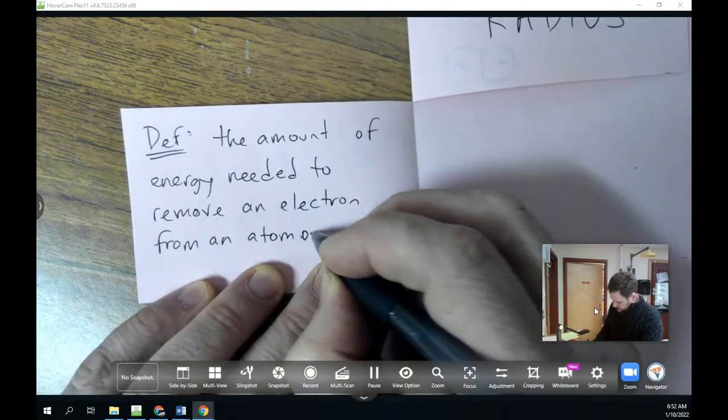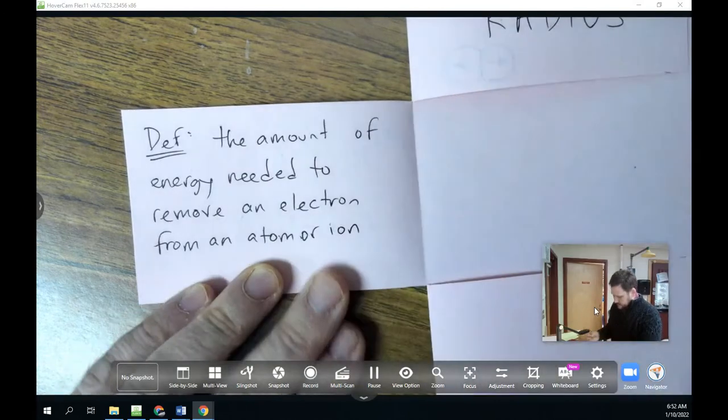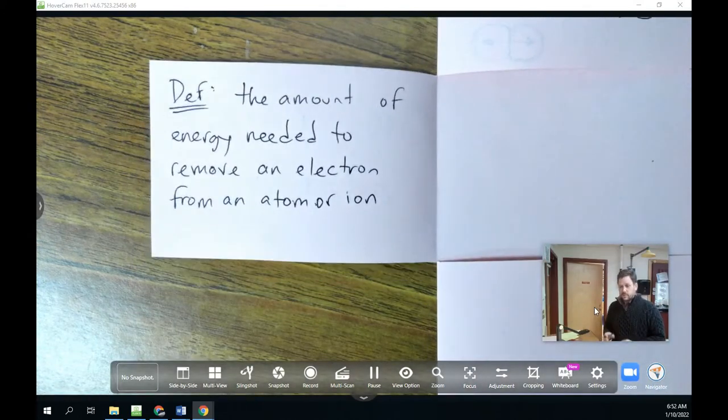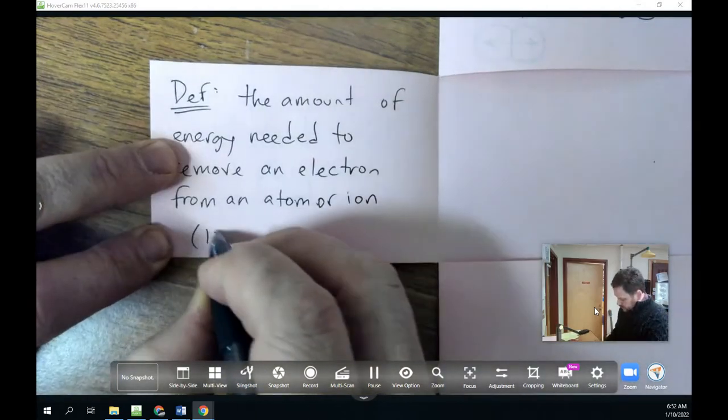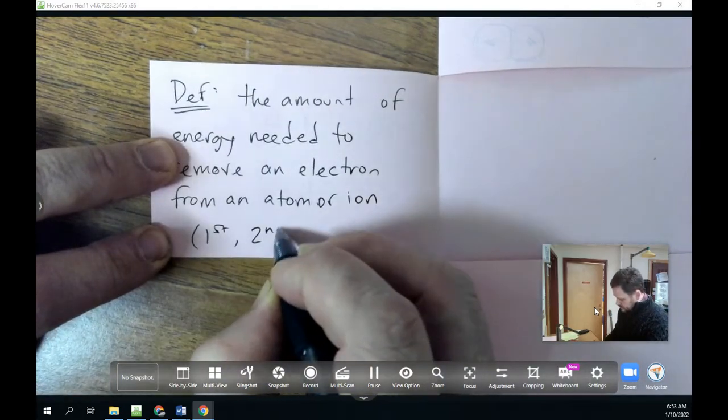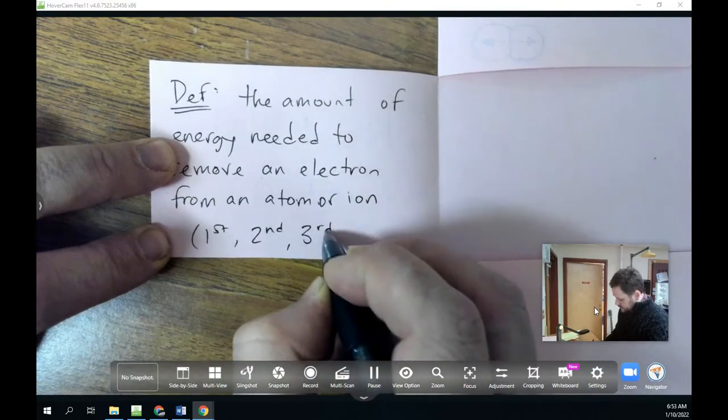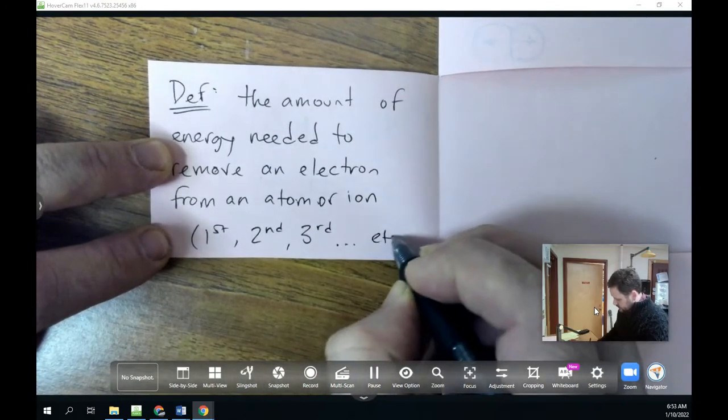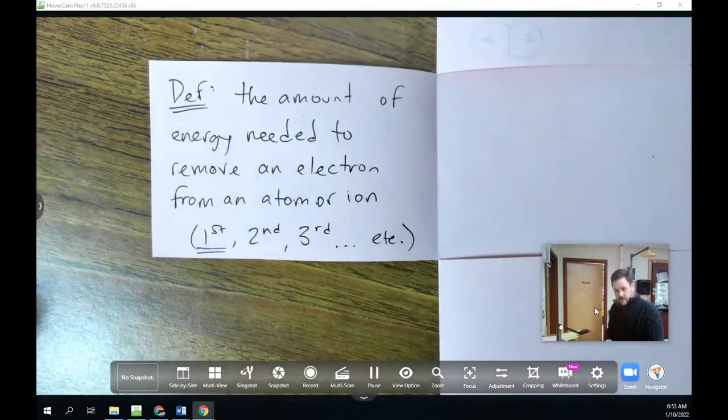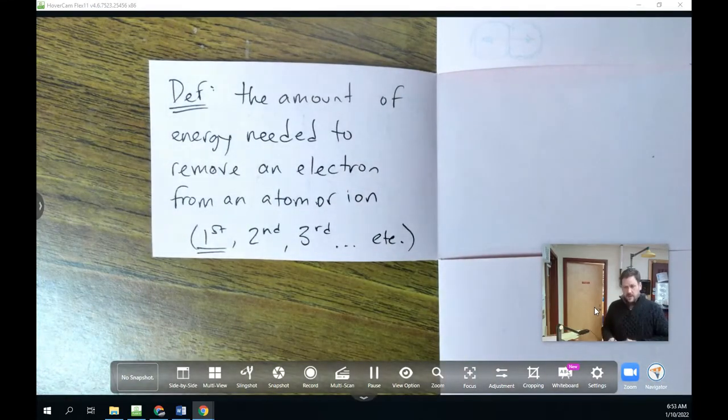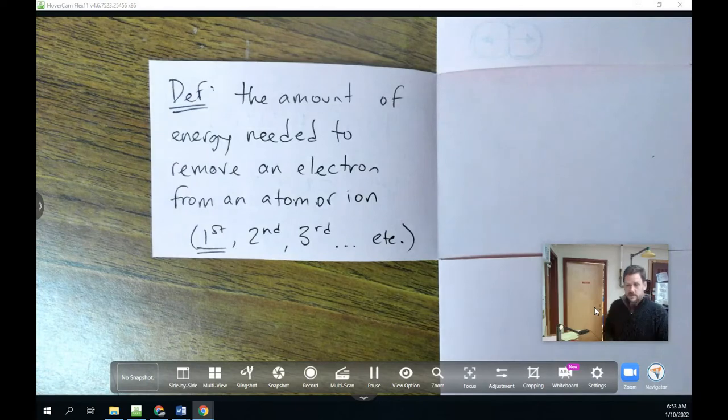The amount of energy needed to remove an electron from an atom. Now, I should include the words or ion because it's true that we could, after we've removed the first electron, try to remove the second and so on. So sometimes we will refer to these as first ionization energy, second ionization energy, third ionization energy, and so on. However, the only pattern that we're going to be examining is that of first ionization energy. And that means we're trying to remove an electron from a neutral atom.